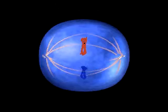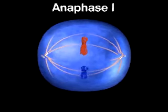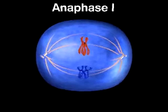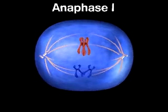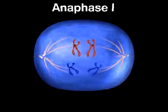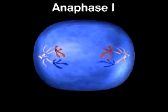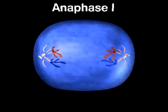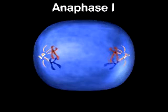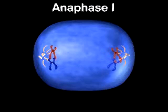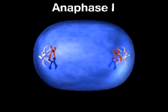During anaphase I, homologous chromosomes separate and move to opposite ends of the cell. This critical step ensures that each new cell will receive only one chromosome from each homologous pair.